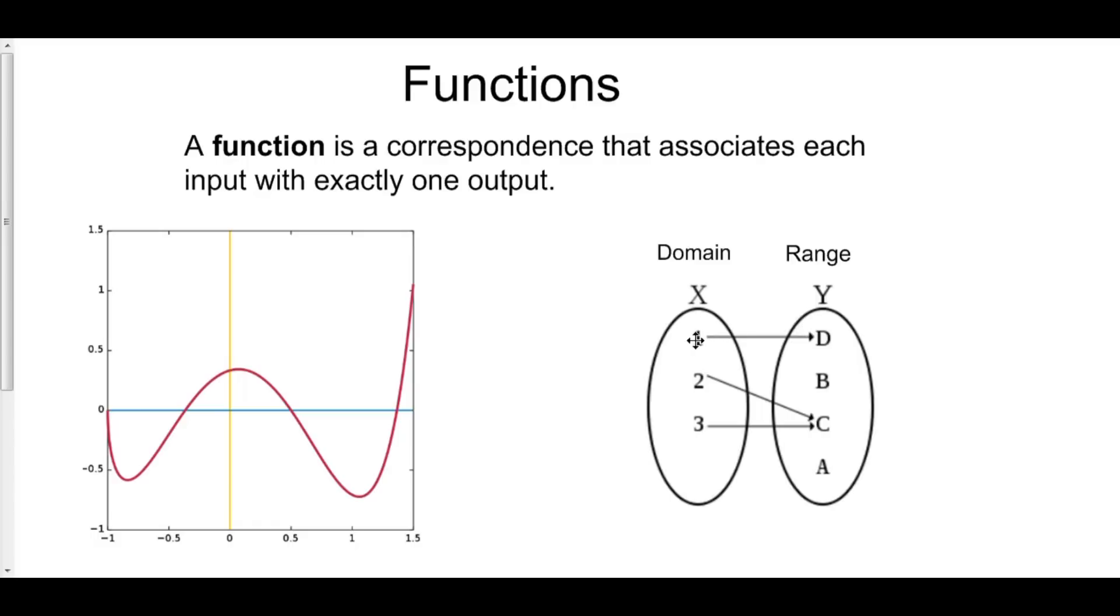Now x, one is going to d, two is going to c, and three is going to c. Each input is going to exactly one output. One isn't also going to b. If one were also going to b, this would not be a function.